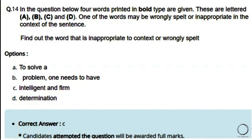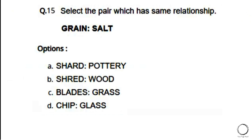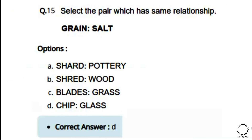Next: Select the pair that has the same relationship as 'grain and salt.' Options: a) shard and pottery, b) shred and wood, c) blades and grass, d) chip and glass. The right answer is option D — chip and glass, because grain is a small particle of salt, similarly chip is a small piece of glass.